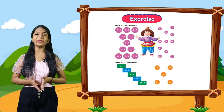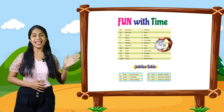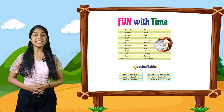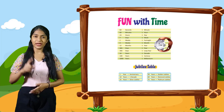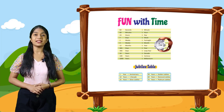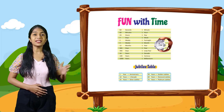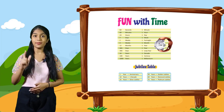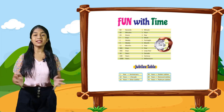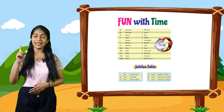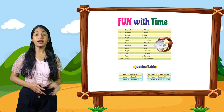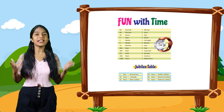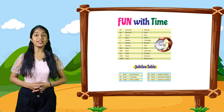Fun with time. Let's do: 60 seconds is one minute. 60 minutes is one hour. 24 hours is one day. 7 days is one week. 14 days is one fortnight. 4 weeks is one month. 12 months is one year. 365 days is one year. 366 days is one leap year. 10 years is one decade. 100 years is one century. 1000 years is one millennium.